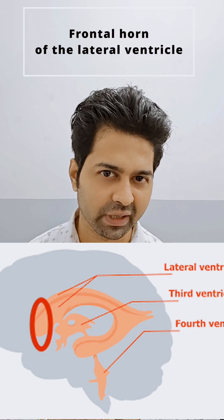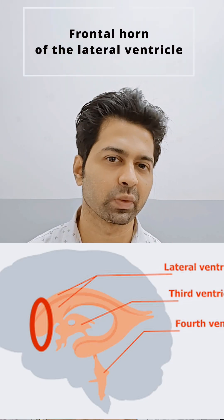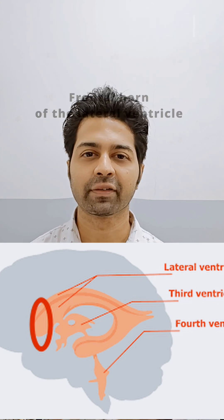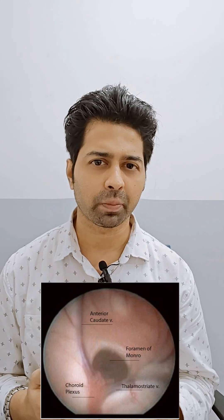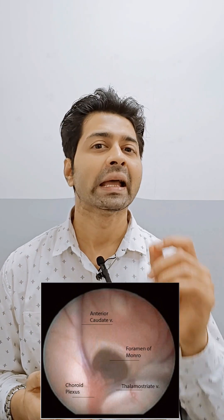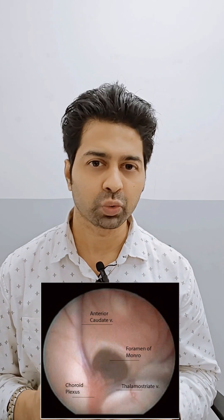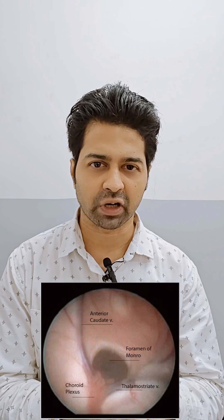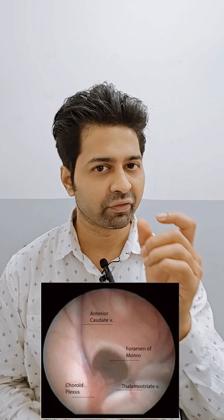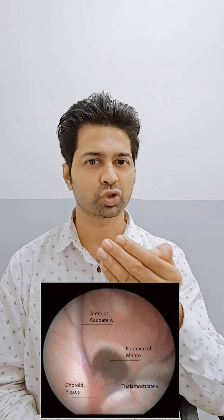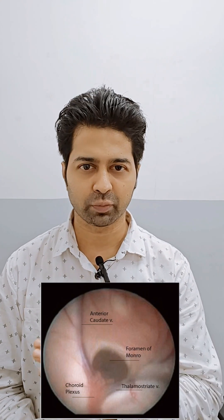It obviously has many other importances as well, but mainly for neurosurgeons it helps us in orienting ourselves as we enter into the lateral ventricle, either endoscopically or microscopically. It helps us orient ourselves and takes us towards the foramen of Monroe. If you see the choroid plexus, that means we are posterior to the foramen of Monroe.